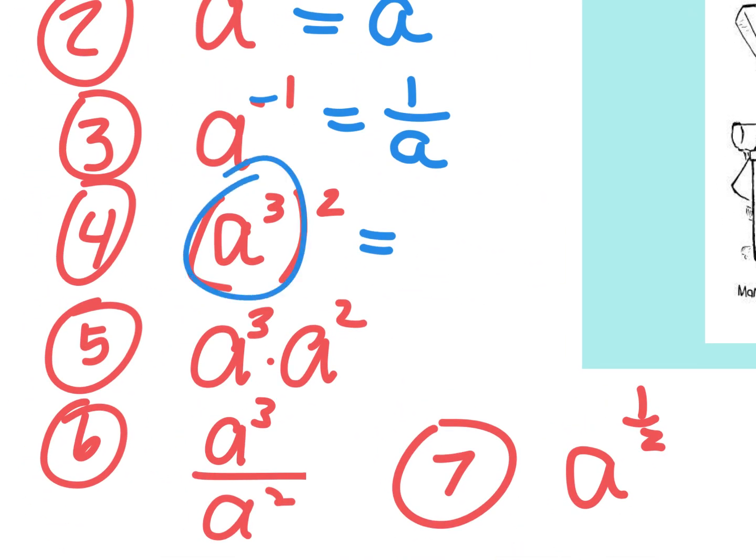This one, I think the best way to do it is to write out what it means. Would you agree A to the third means A, A, A? That's what that means, right? And then I'm going to square it. Now if you look at that, there's no way for you to think that the answer is five.